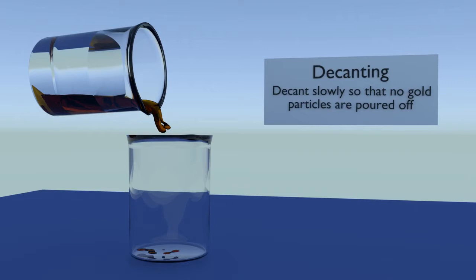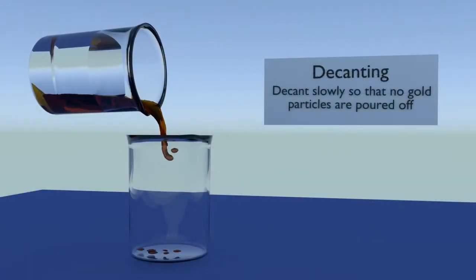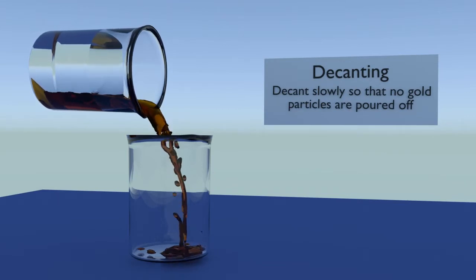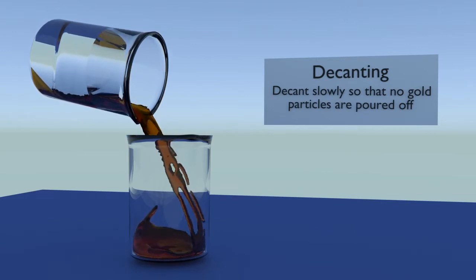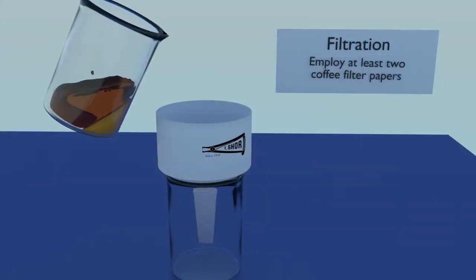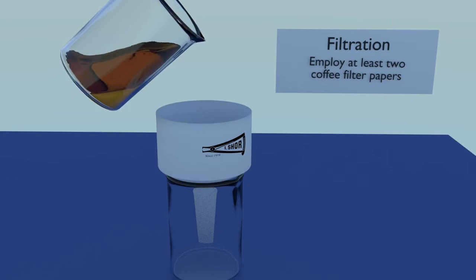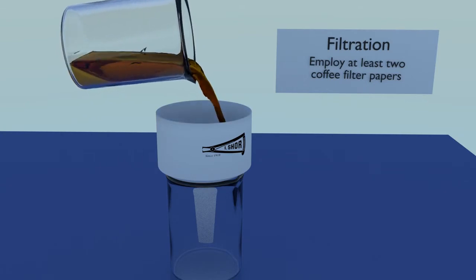Decanting or filtering: once the solution has been tested for dissolved gold and the test confirms that the solution is free of dissolved gold, it is time to either filter or decant to recover the gold particles. It is generally considered simpler and easier to decant the solution rather than to filter it. To decant the solution simply means to pour the solution off slowly and carefully. If filtering, use a Buchner filter funnel with at least two layers of coffee filter paper.